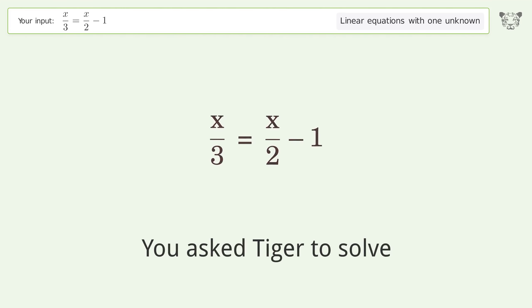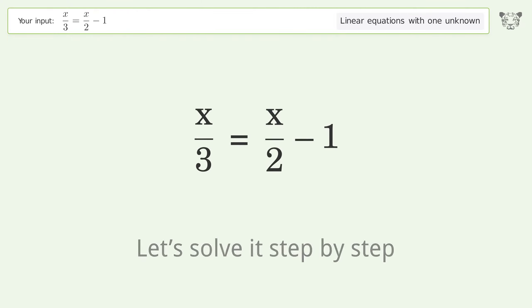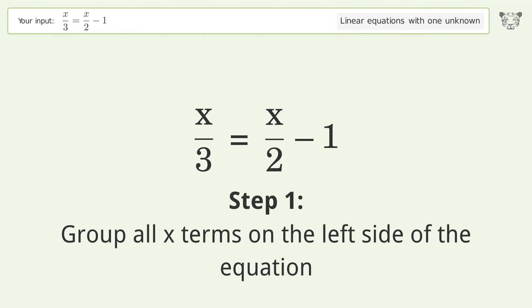You asked Tiger to solve this. This deals with linear equations with one unknown. The final result is x equals 6. Let's solve it step by step. Group all x terms on the left side of the equation.